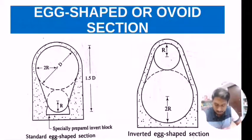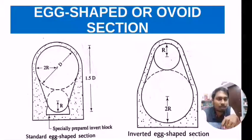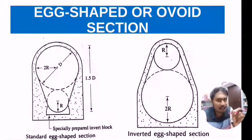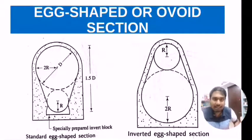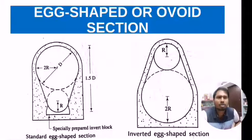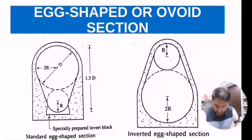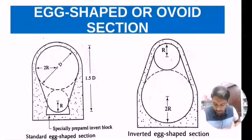The X-shape section is formed by placing two imaginary circles one upon another — the bottom circle having radius R and the upper imaginary circle having radius 2R. Standard X-shape sections are not very stable, so we generally consider the inverted X-shape section, which can be used for construction of large sewers with heavy discharge.